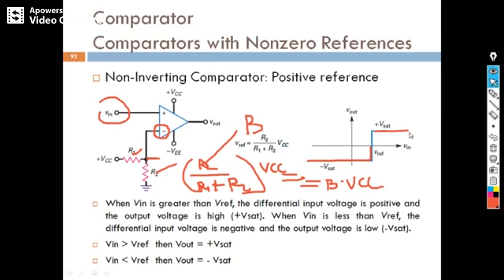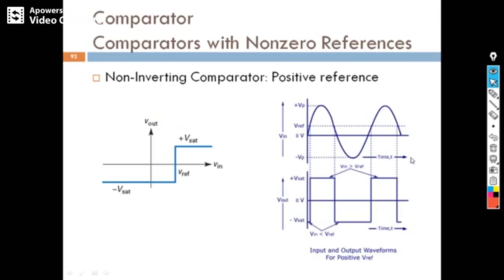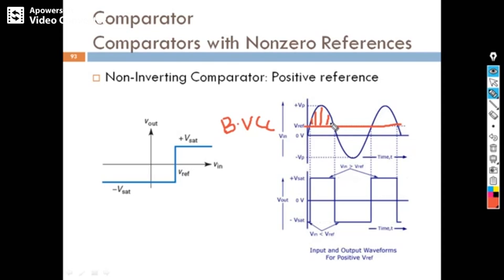You can see here — this is our reference B·VCC. When the input is greater than this reference, the output is positive V-sat. When the input is less than the reference, the output is negative V-sat. Once again, you can see the positive V-sat region. This is about the non-inverting comparator with a positive reference.